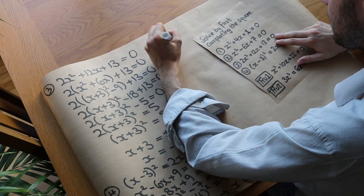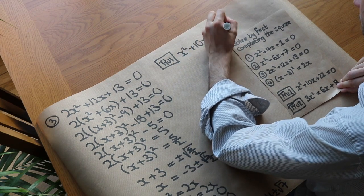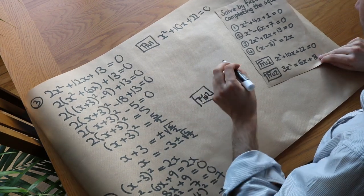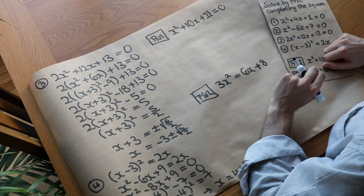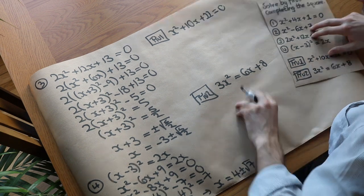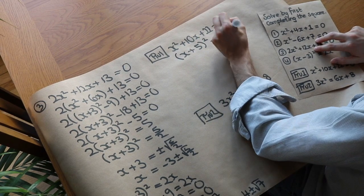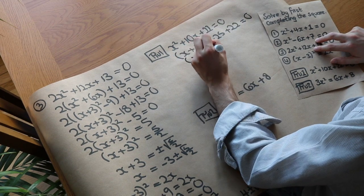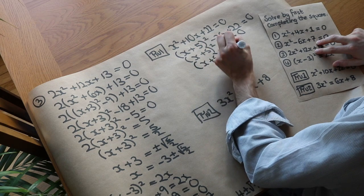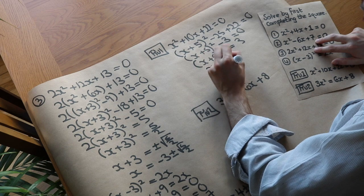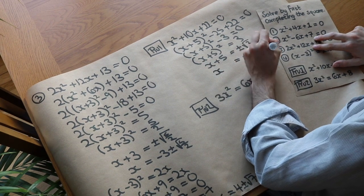Here are two test-your-understanding questions. The first is x squared plus 10x plus 22 equals 0. Half of 10 is 5, so x plus 5 squared minus 25, plus 22. That simplifies to x plus 5 squared minus 3 equals 0. Add 3 to both sides, then square root both sides: x plus 5 equals plus or minus root 3. Subtract 5: x equals minus 5 plus or minus root 3. That's the final answer for the first one.